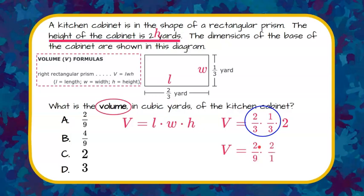And then we need to multiply by two, which can be written as a fraction as two over one. So once again, I'm going to multiply my numerators, and then multiply my denominators. So two times two is four, and nine times one is nine, giving me four-ninths.